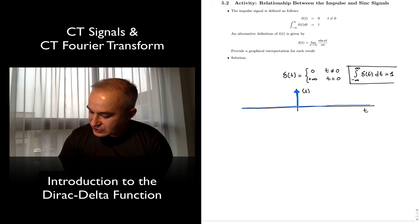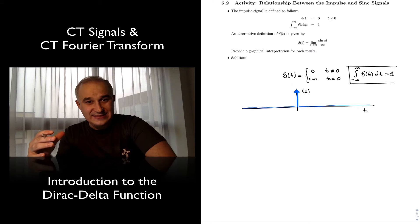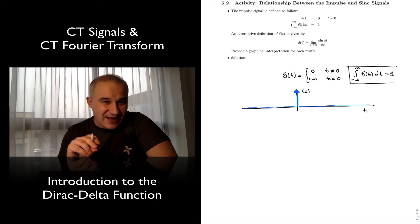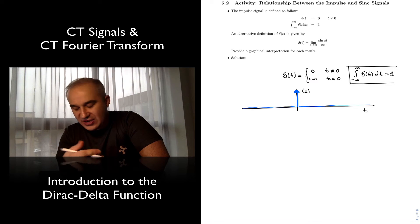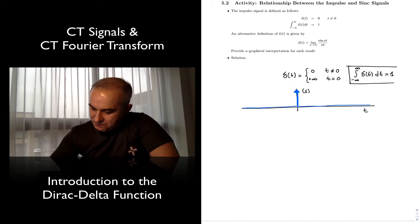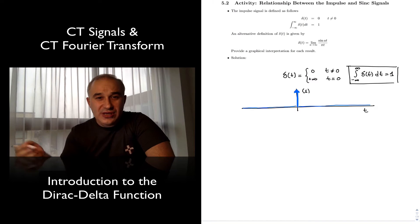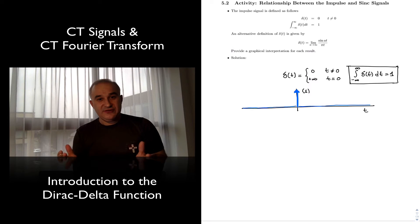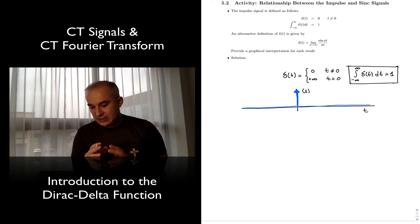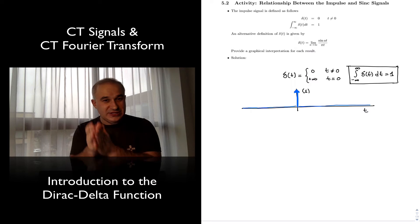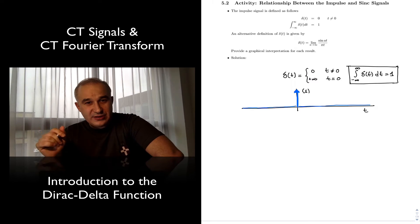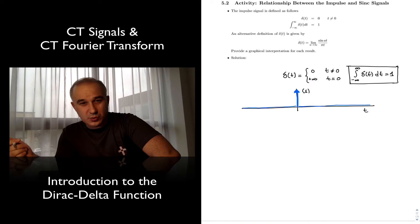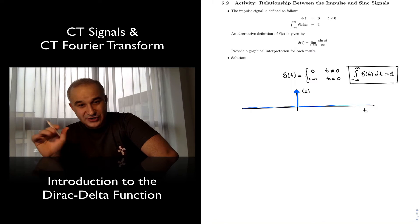Technically the impulse function, and I am not going to go over the technicalities, it is not a function per se, it is a distribution, it is a generalized function, but if you integrate it, or you can think of it as this is the definition: it is a function that is zero everywhere, it is impulsive at t equals zero, and the area under that curve is equal to 1. Think of it as a definition.